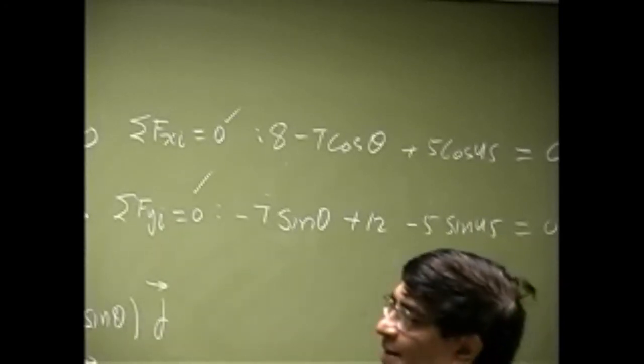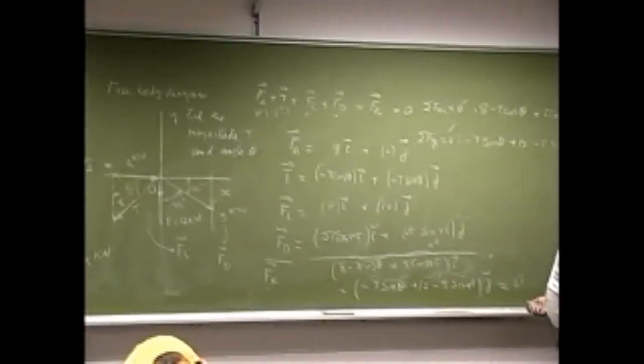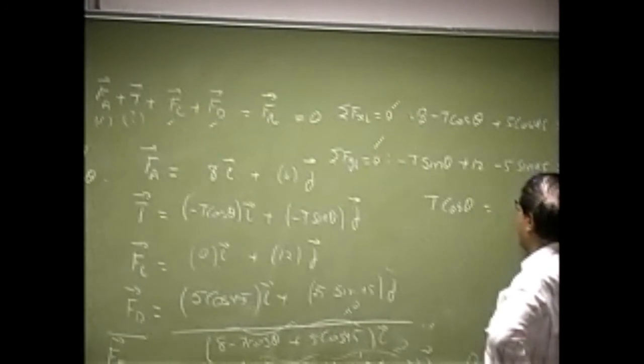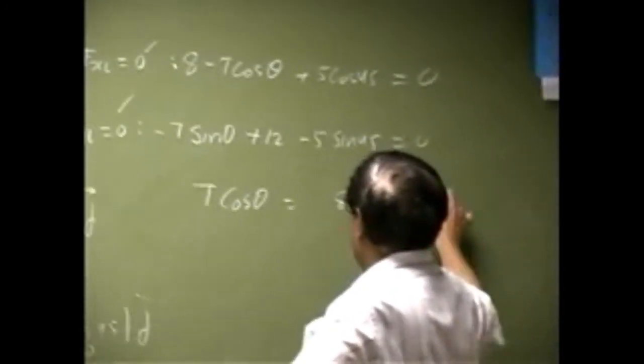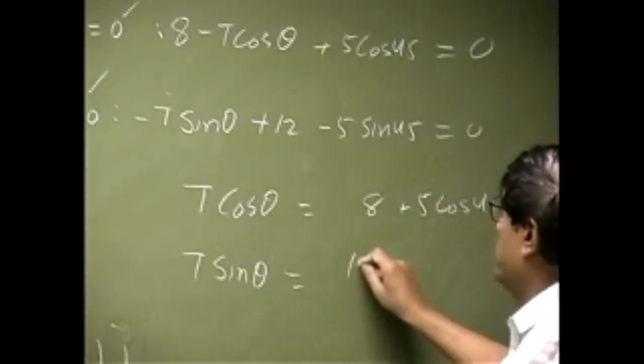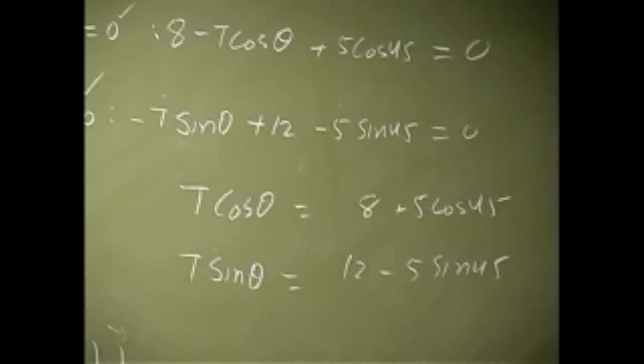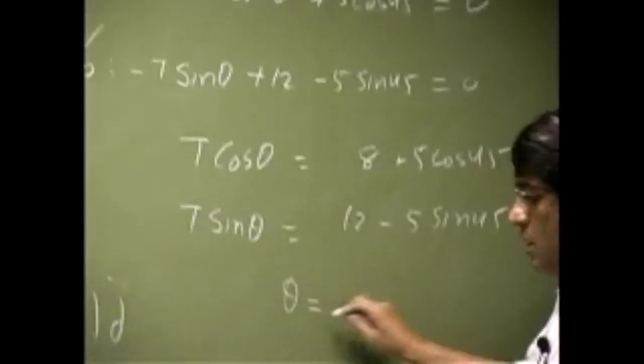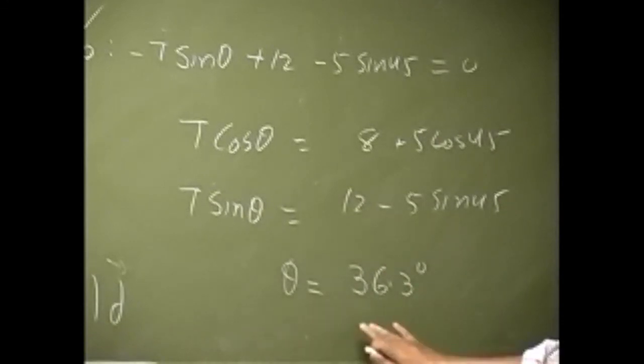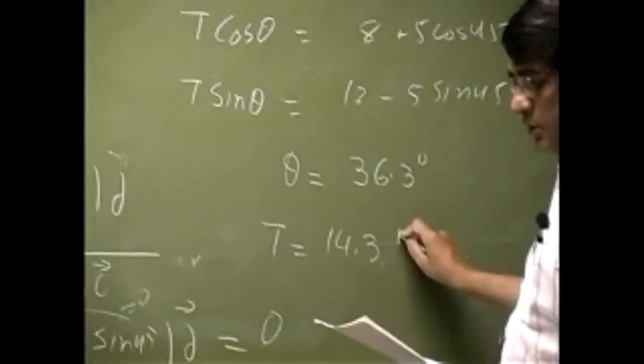So once you have this, then it's easy to solve for T. You have T cosine theta as 8 plus 5 cosine 45. You have T sine theta, that will be 12 minus 5 sine 45. You can divide the equations and that will give you the angle theta as 36.3 degrees. So once you have the angle, you make a substitution of these equations. You get T as 14.3 kN.